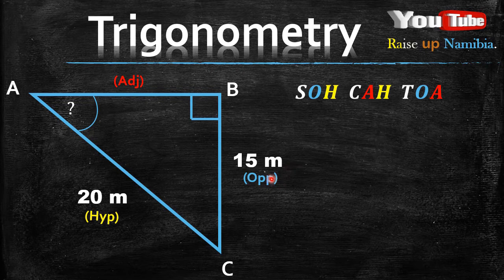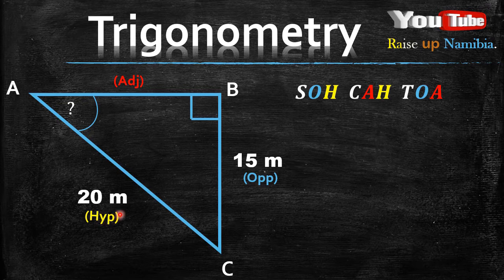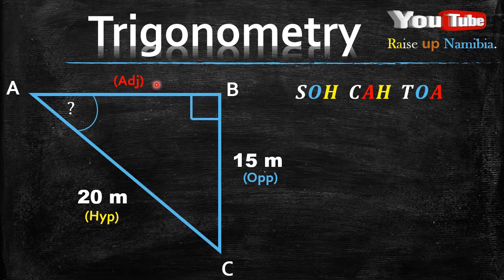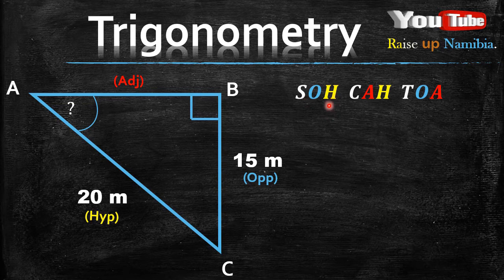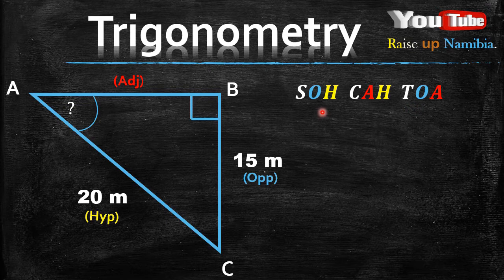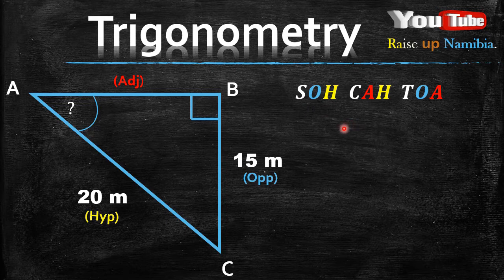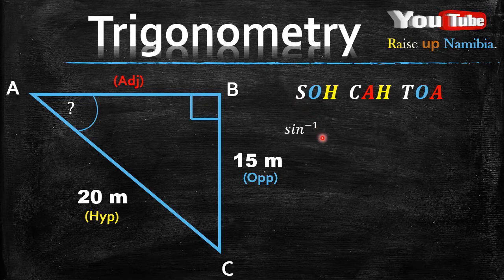Now that your word SOH CAH TOA is here, you check your labelings. Your opposite, do you have a figure for it? Yes, you have 15 meters. Your hypotenuse, do you have a figure for it? Yes, you have 20 meters. Now what about your adjacent? Is there a figure? No, there is no figure except the labeling that it's an adjacent. So when we come back to our three-letter terms here, which is the SOA, the CAH, and the TOA, we are going to be looking for the term that does not have an A. So which one doesn't have an A in SOH CAH TOA? It's the first one.